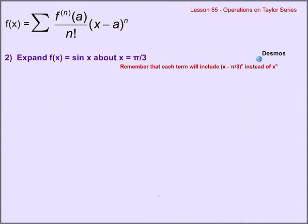In today's video we're going to continue working with Taylor series. We're going to start by finding a Taylor series for sine of x. We've already done that — before we had done the Maclaurin series, which was centered on x equals 0. Today we're going to do it centered on x equals pi over 3, which is going to be very similar. It's a little bit more annoying because our derivatives won't be so pretty — it won't just be a bunch of zeros and ones — but they are still numbers we can handle.